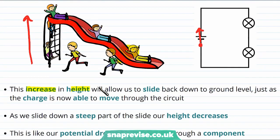Well, this increase in height will allow us to slide back down to the ground level. In the same way, the charge having moved through the potential difference of the cell is now able to move through the circuit.